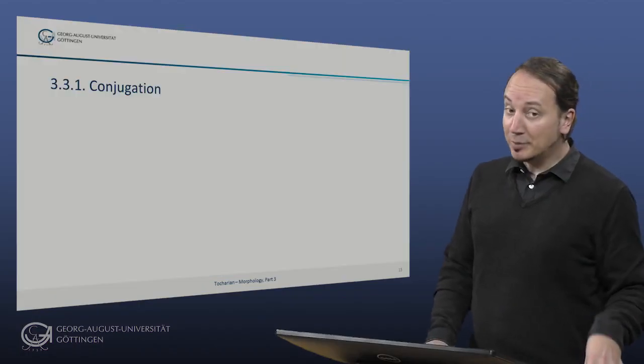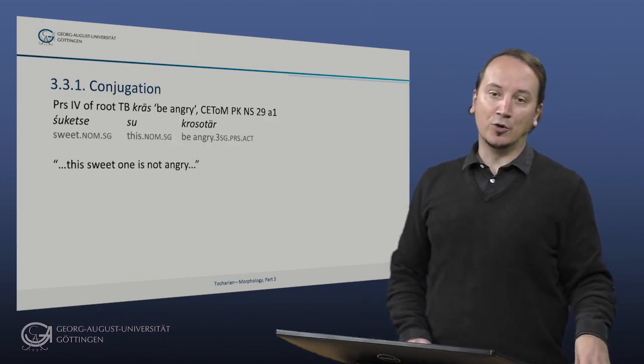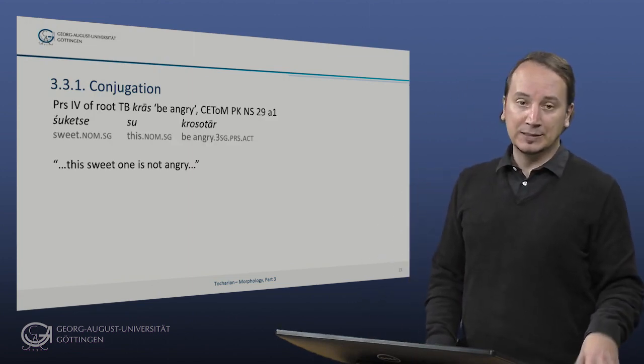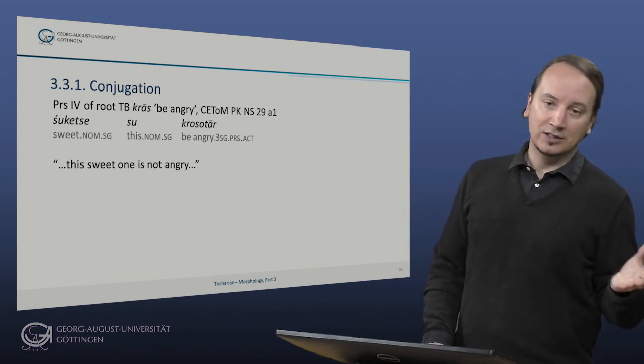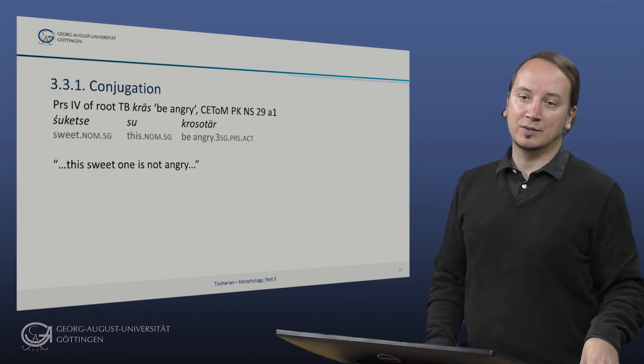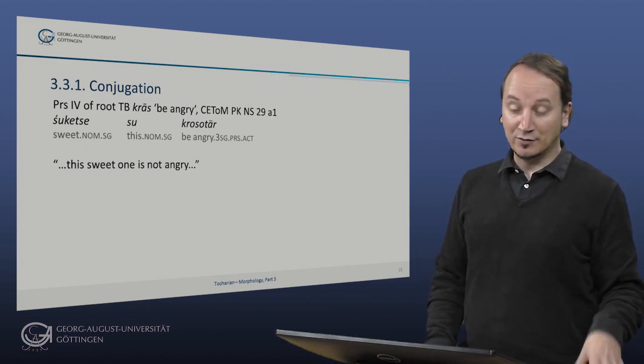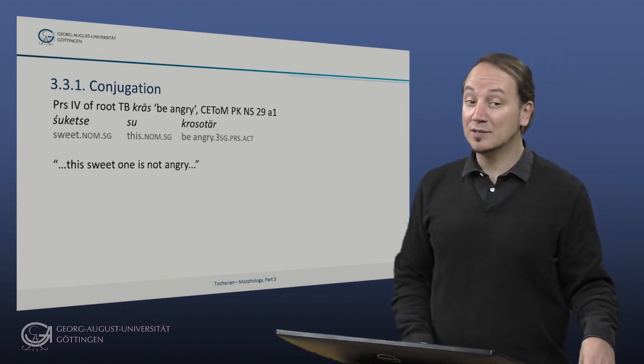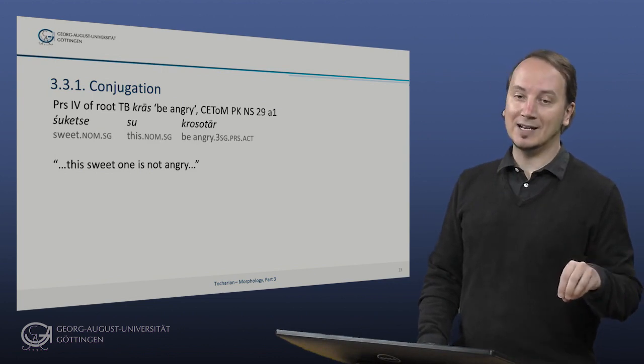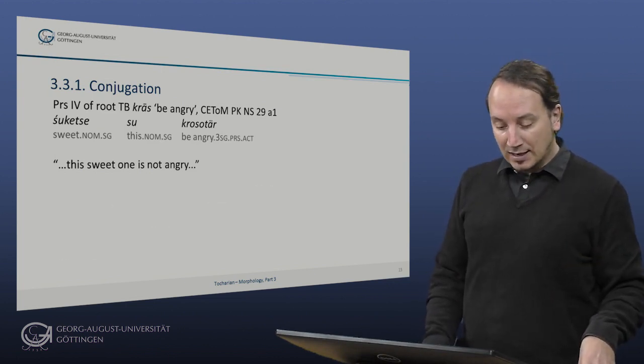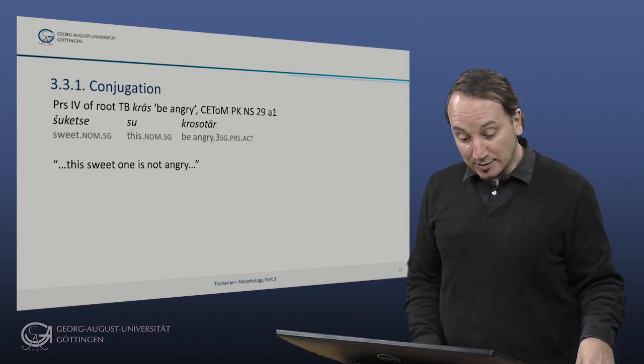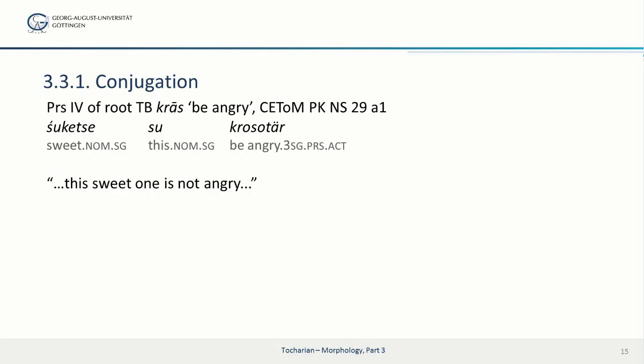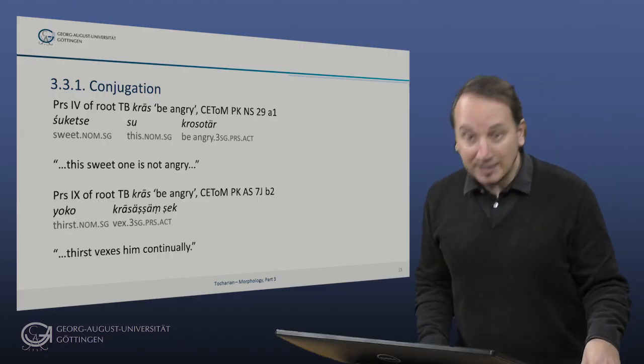The different verb classes combine to form valency paradigms. So, for example, intransitive present 4 has a transitive equivalent in present 9. The first example here is again from the Supriya Jataka, and here we have the intransitive present class four of the root kras, which means 'to be angry'. So let's look at this example here. So we have ṣuketse tsu krośotur, 'this sweet one is not angry, krośotur.'